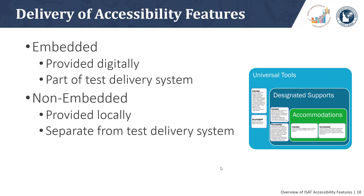Another designation given to the accessibility features described in the UWAG has to do with how students access them. Embedded refers to those accessibility features provided as digitally delivered components of the test administration system — for example, color contrast or audio. Non-embedded refers to those accessibility features provided locally or essentially separate from the test administration system — for example, a 100's table or refreshable braille.